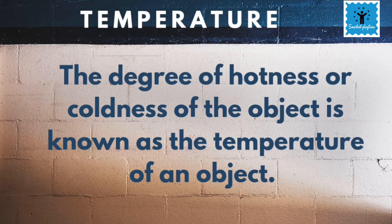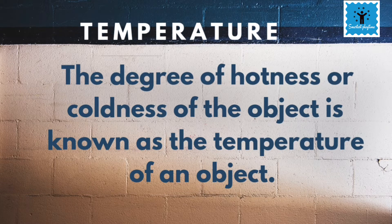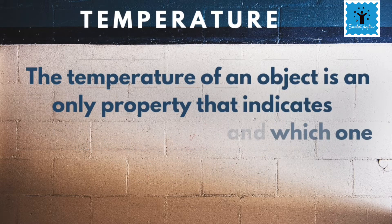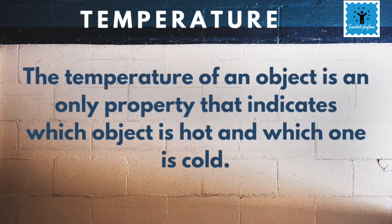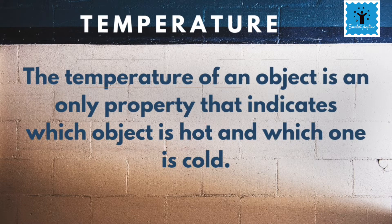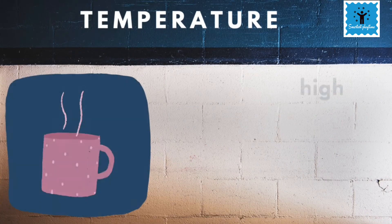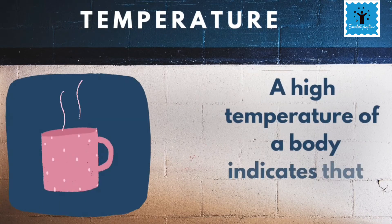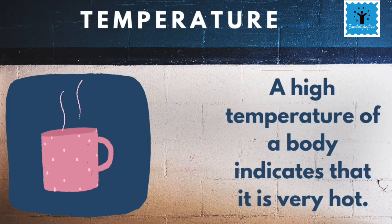The reliable measure of hotness and coldness of an object is called the temperature of an object. It is the only property that indicates which object is hot and which one is cold. A high temperature of a body indicates that it is very hot.